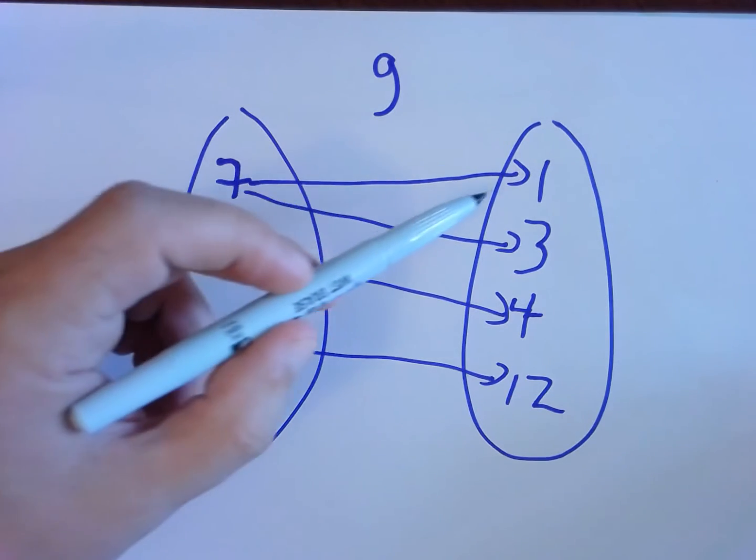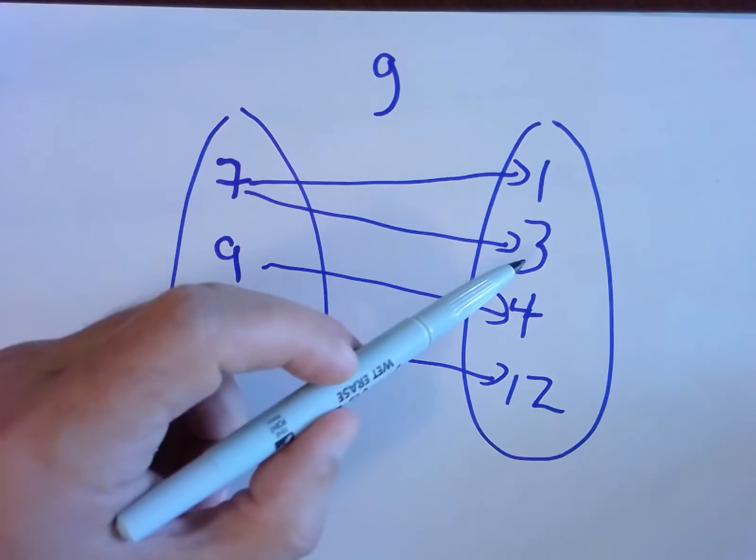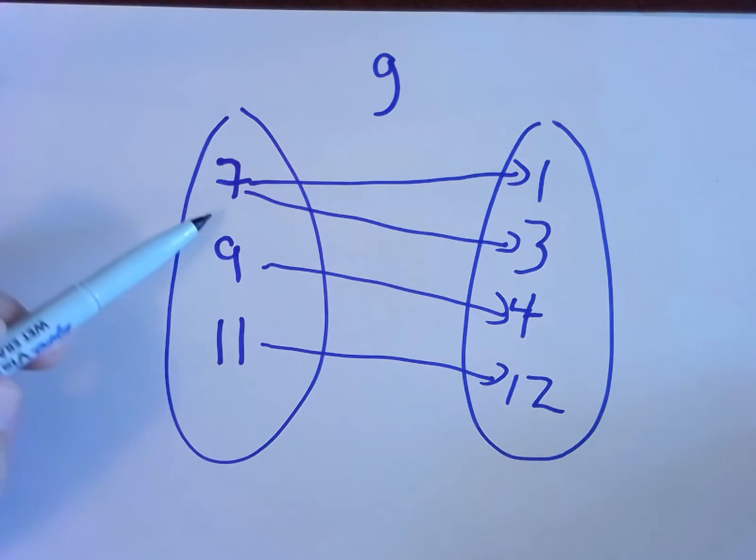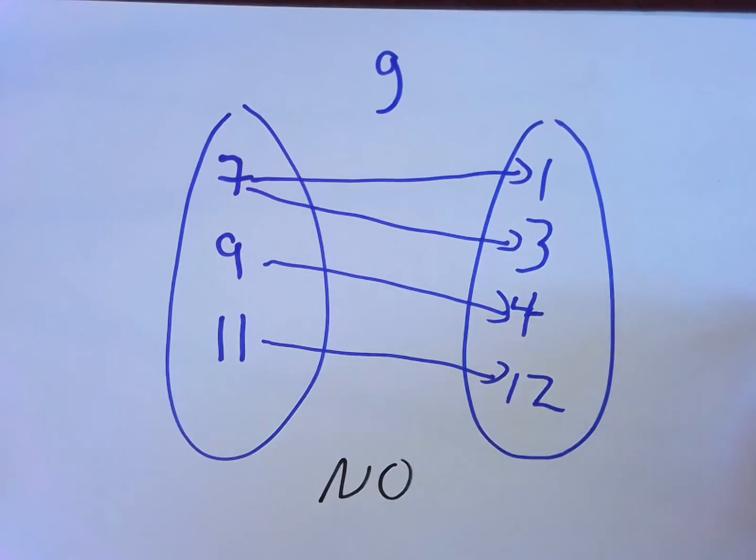The input 7 sometimes is 1, sometimes is 3. We have two lines coming off 7. This input has two different outputs. g is not a function.